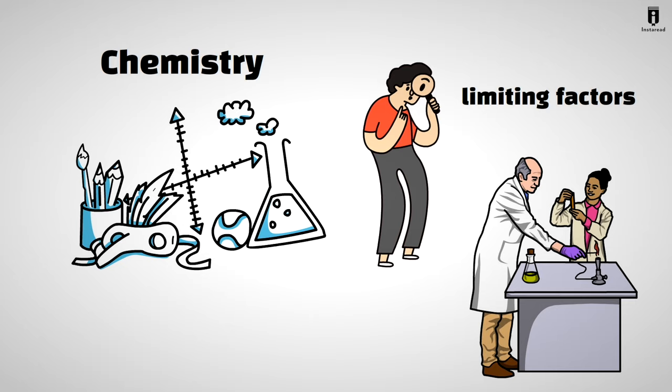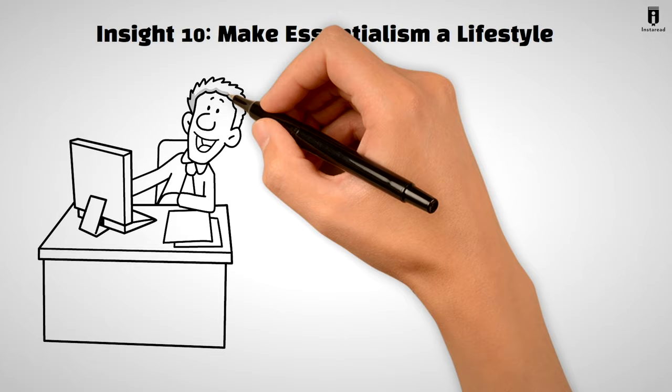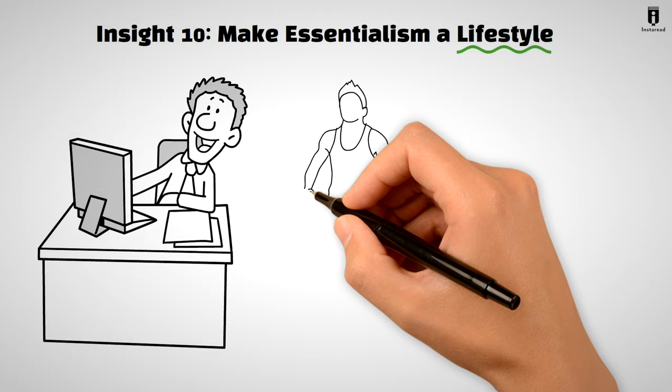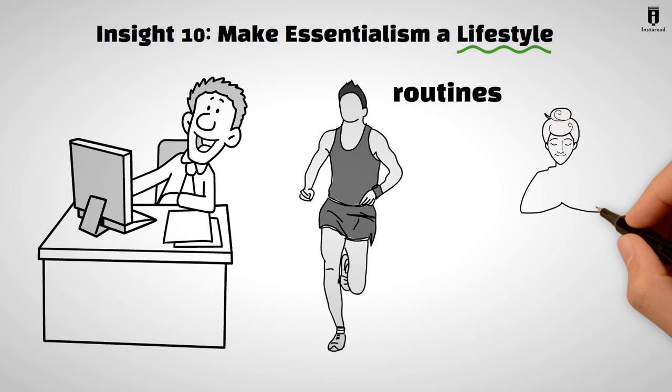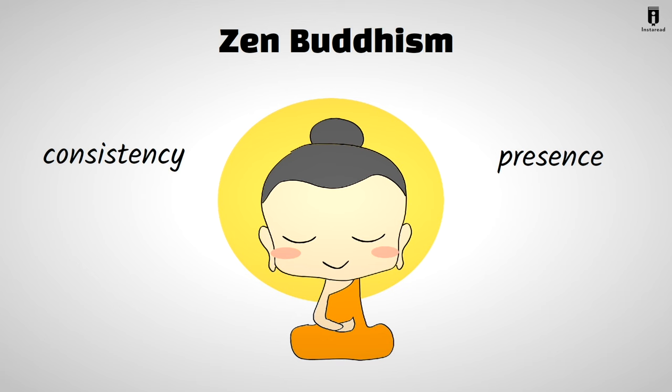Insight 10. Make Essentialism a Lifestyle. Essentialism isn't just for work. It's a lifestyle. Implement it by establishing routines that prioritize what truly matters. Be present in the moment and make Essentialism the core of every decision. This approach shares similarities with Zen Buddhism, where consistency and presence in the moment is a crucial aspect of living an essentialist lifestyle.